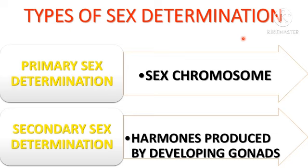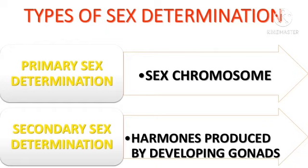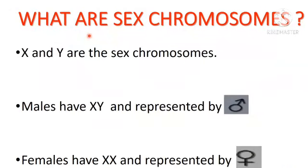We have two types of sex determination: primary sex determination and secondary sex determination. Primary sex determination is by sex chromosomes. Secondary sex determination is by hormones produced by developing gonads, like testosterone in males and estrogen in females. Primary sex determination is very important.